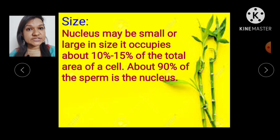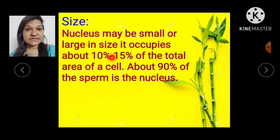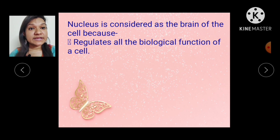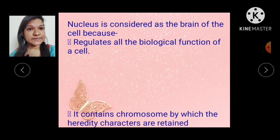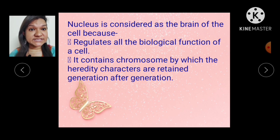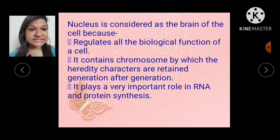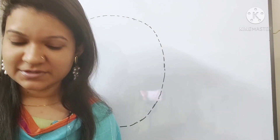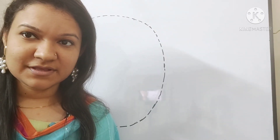The size of nucleus may be small or large. It occupies about 10 to 15 percent of the total area of the cell. About 90 percent of the sperm is the nucleus. Nucleus is considered as the brain of the cell because it regulates all the biological functions of a cell. It contains chromosomes by which hereditary characters are retained generation after generation, and it plays a very important role in RNA and protein synthesis.